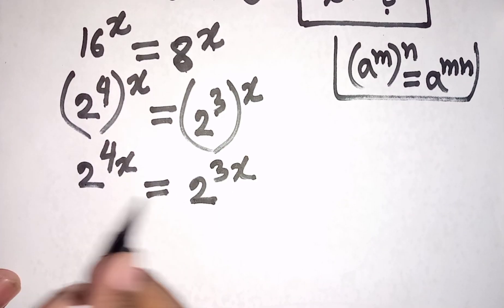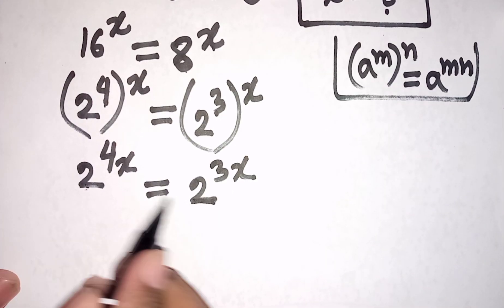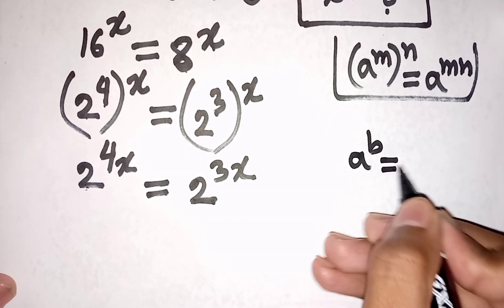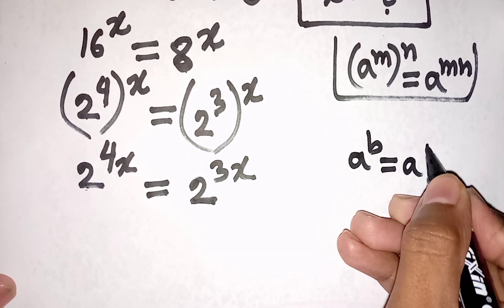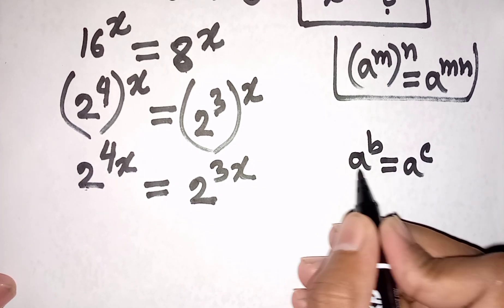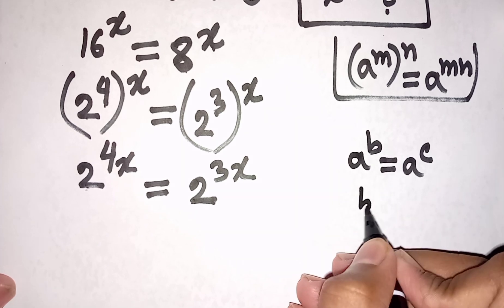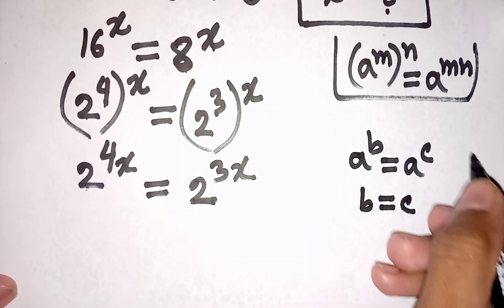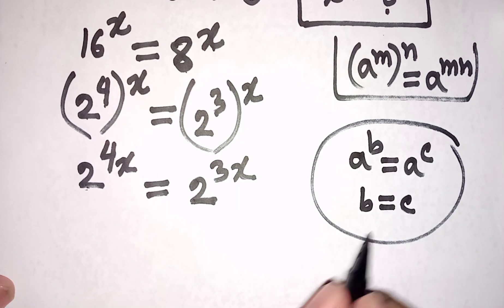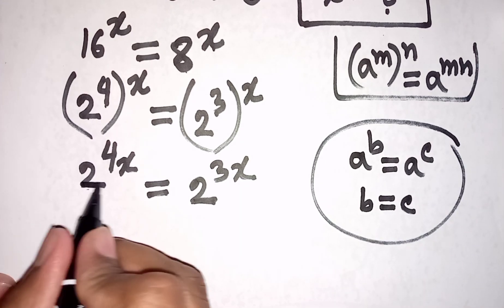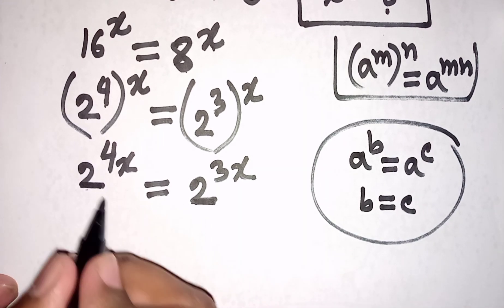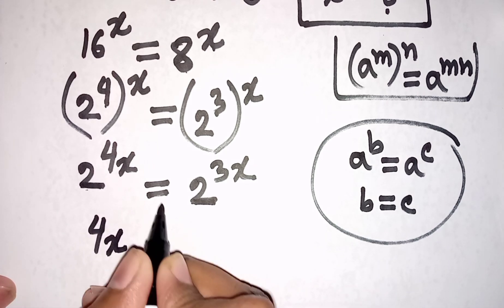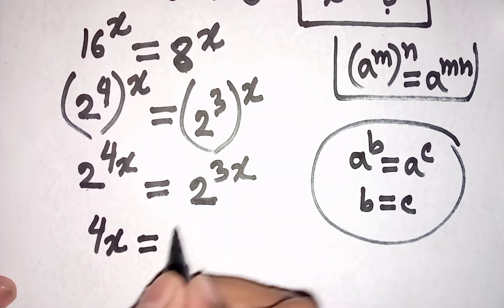We see 2 is the same base. So according to this exponential rule, that a power b is equal to a power c — since the base a is the same, it will be cancelled, and power b will be equal to power c, so b is equal to c. According to this rule we can write here: 2 will be cancelled, power 4x will be equal to power 3x.